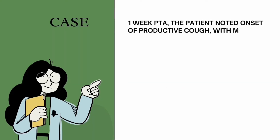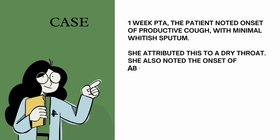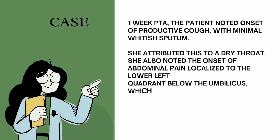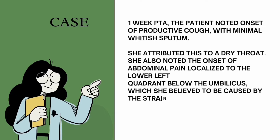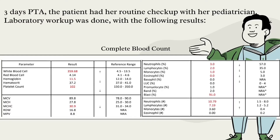One week prior to admission, the patient noted onset of productive cough with minimal whitish sputum, attributed to a dry throat. She also noted onset of abdominal pain localized to the lower left quadrant below the umbilicus, believed to be caused by strain from frequent coughing. The condition was tolerated until three days prior to admission when the patient had a routine check-up with therapy, nutrition, and laboratory workup.